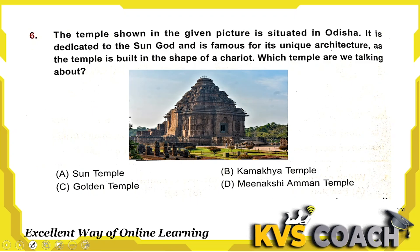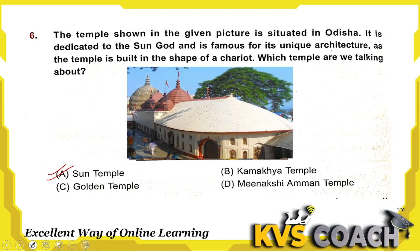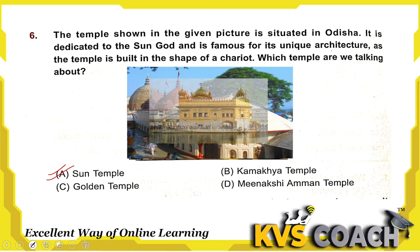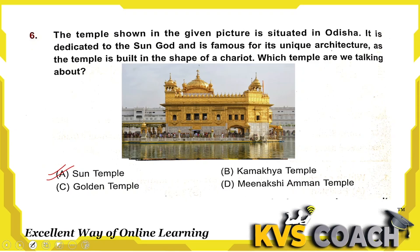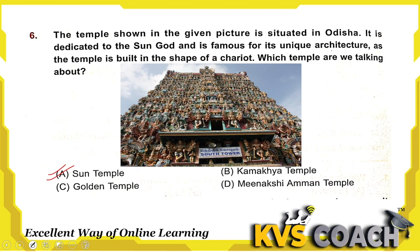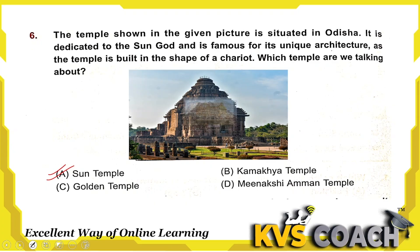Next question: the temple shown in the picture is situated in Odisha, is dedicated to the Sun God, and is famous for its unique architecture as it is built in the shape of a chariot. Option A is the Sun Temple. Option B is Kamakhya Temple. Third is the Golden Temple, and fourth is Meenakshi Amma Temple. The right answer is option A, Sun Temple.